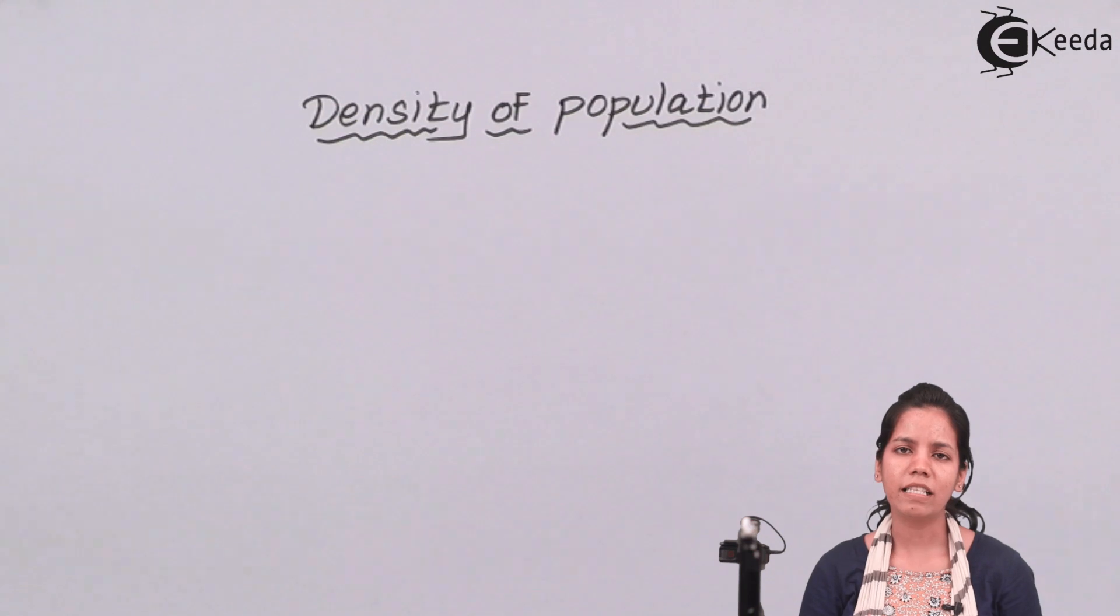For example, a certain place or area has been designated to live for a certain number of people. For example, one chair is designated to sit for one person. If two people try to sit on that chair then that chair is said to be densely populated.